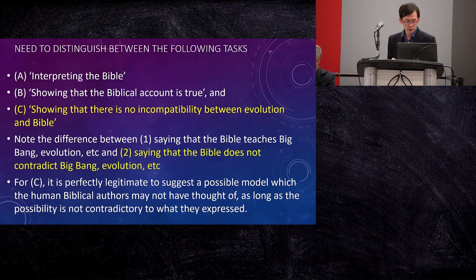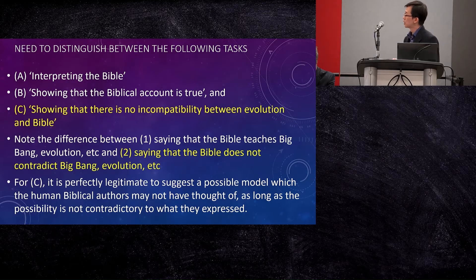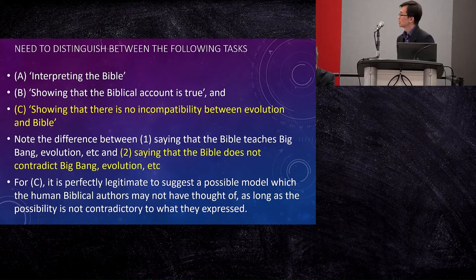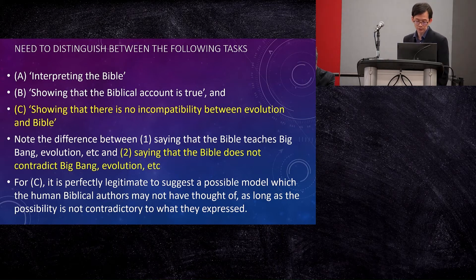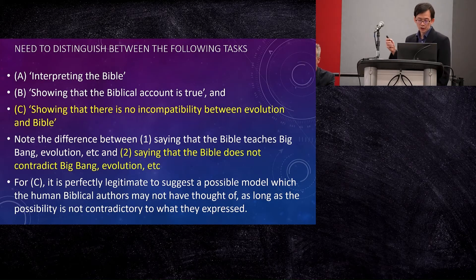We also need to distinguish between the task of interpreting the Bible, which I call Task A, and showing that the biblical account is true and that there is no incompatibility between evolution and the Bible, which I call Task C. We need to know the difference between saying that the Bible teaches the Big Bang, evolution, et cetera, and saying that the Bible does not contradict the Big Bang, evolution, et cetera. These two propositions are different, and I'm arguing for the second one — Task C.